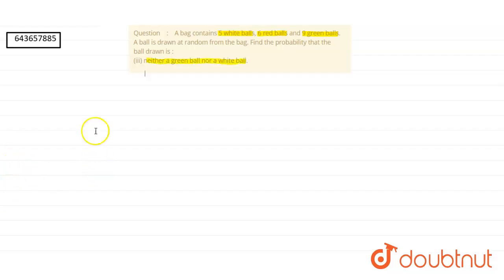So for solving this question, we will first calculate the total number of balls. So we have 5 white balls, 6 red and 9 green balls.